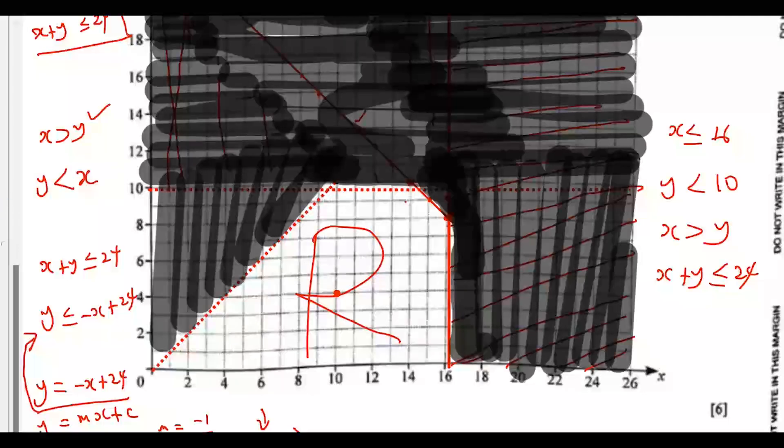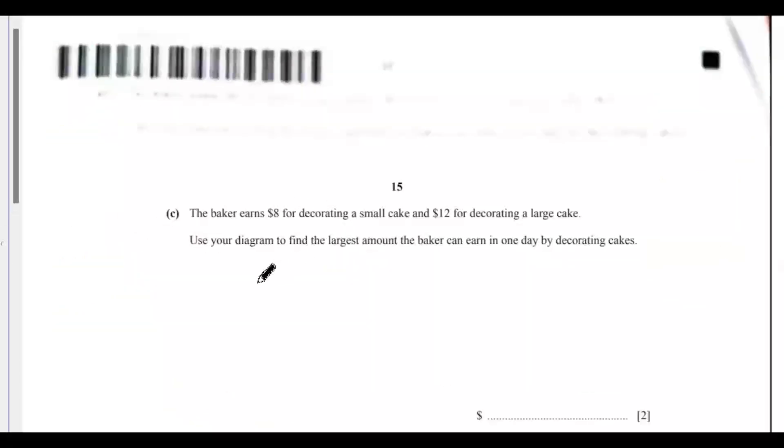What we need to do is very simple. We need to get the maximum value of x. Don't forget that $8 is for x and $12 is for y. The small cake is x and the large cake is y. So we need to get the maximum value of x and multiply by $8, then plus the maximum value of y and multiply by 12 to find the largest amount the baker can earn in one day. This is x maximum.